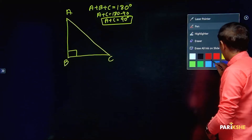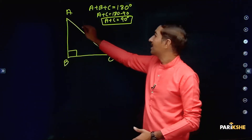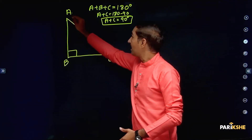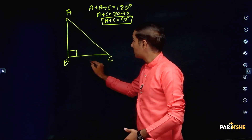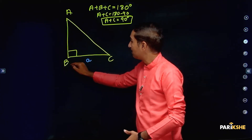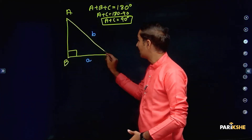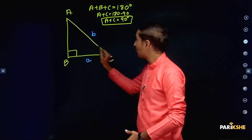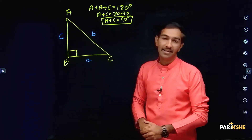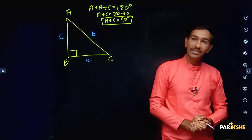Now, in this right angle triangle, angle A has its opposite side, angle B has its opposite side, and angle C has its opposite side — where C is the right angle.